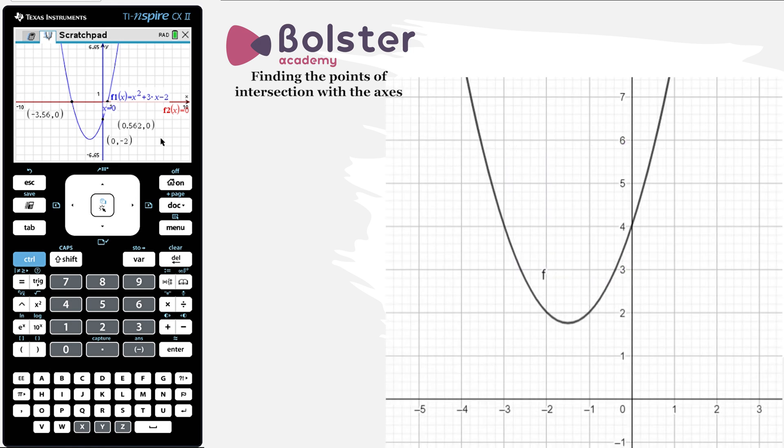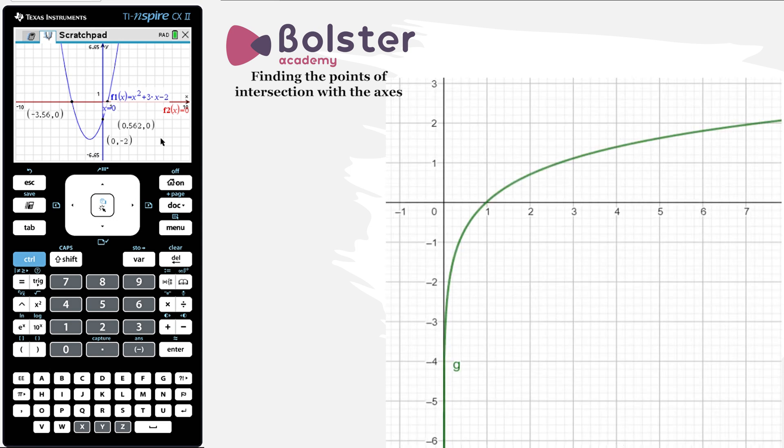Does every function have to have an x-intercept or y-intercept? This function here has no x-intercepts. It doesn't cross the x-axis at any point. And this function has no y-intercept. It has a vertical asymptote on the y-axis, i.e. a line it never crosses.